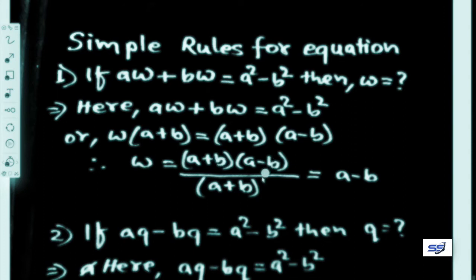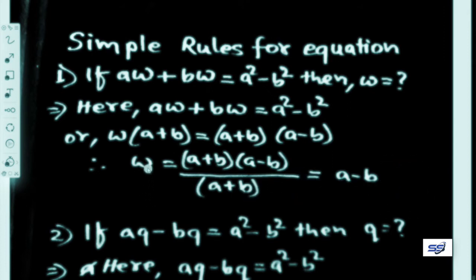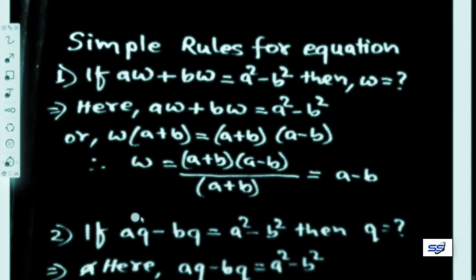So w equals (a plus b)(a minus b) divided by (a plus b). The (a plus b) terms cancel, and the result is w equals a minus b.